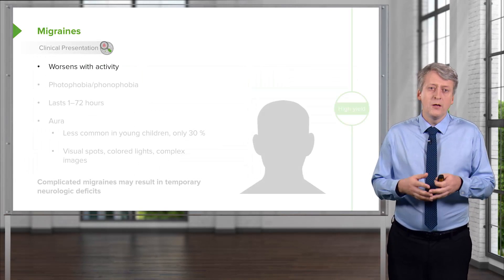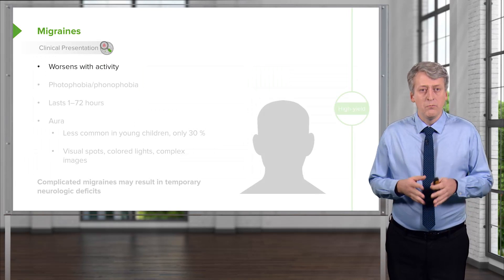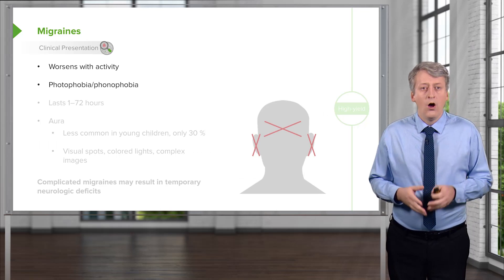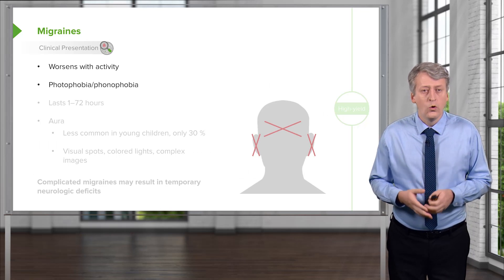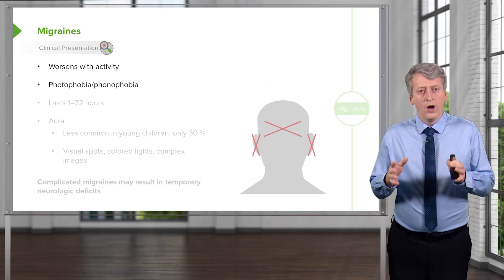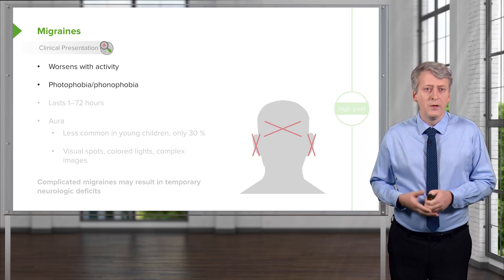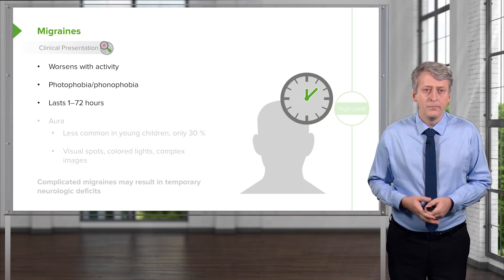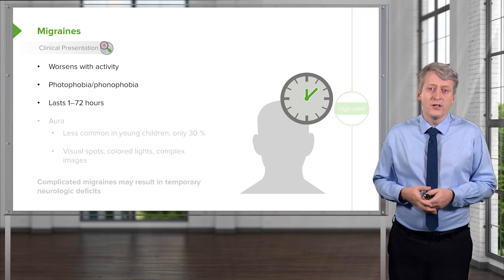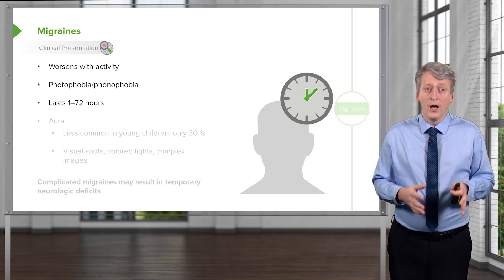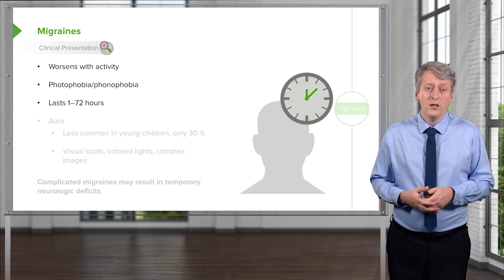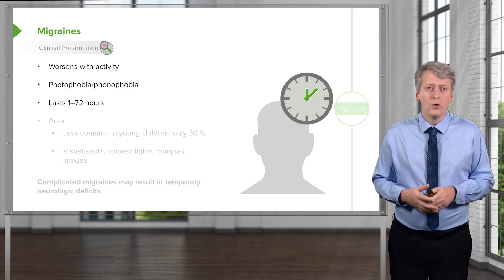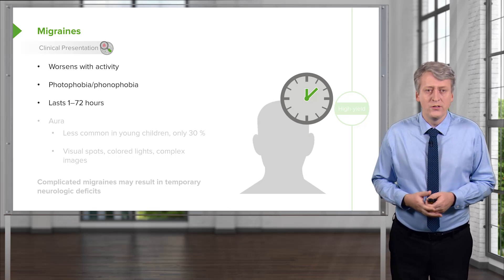Migraines typically worsen with activity. It's important for a migraine patient just to lie still. Often they have photophobia or phonophobia, so a quiet, dark place is an important way to help them feel better. Migraines can last one hour but rarely up to even three days. A one-hour headache is usually tolerable, but getting them under control is important.